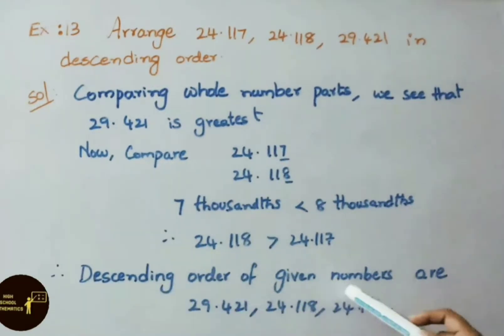Therefore, descending order of given numbers are 29.421, 24.118, 24.117.